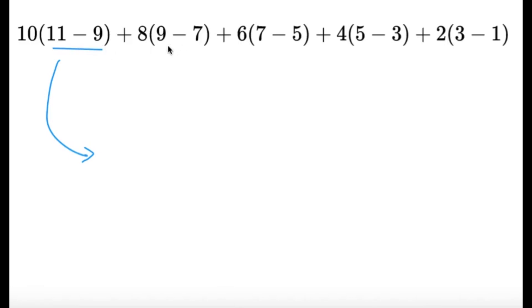As you can see here, 11 minus 9, 9 minus 7, 7 minus 5, 5 minus 3, and 3 minus 1 are all just equal to 2. Because we have a nice pattern going on, it is expected that there will be nice observations like this one along the way.